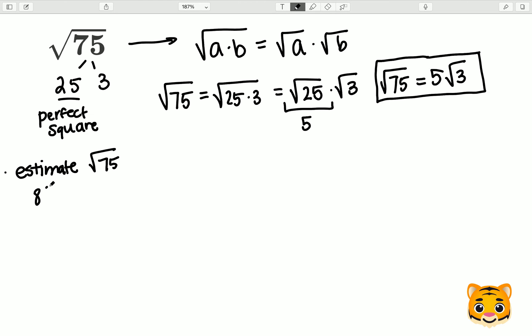The first value we should look at is 8 squared, which is 64. The second value we should look at is 9 squared, which is 81. So we can see that 75 falls between 64 and 81.